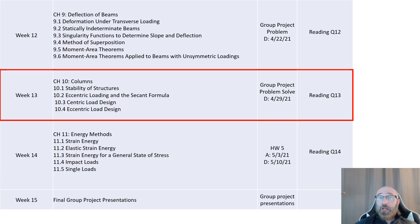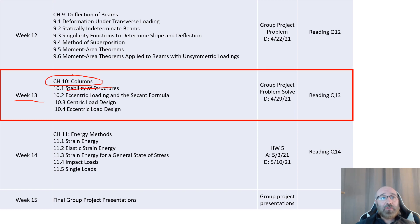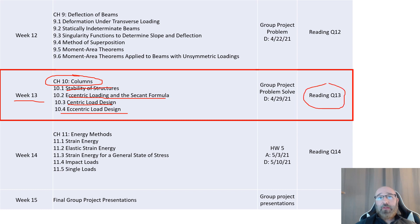Now let's take a look at our calendar for the rest of the semester. We're in week 13, module 13, looking at chapter 10 in our textbook covering the topic of columns. Within this week, we'll go through the stability of structures, eccentric loading and secant formula, and eccentric load design. You'll also have your quiz number 13, and the other item this week is that you have your group project solutions for the other group that you're solving their problem for.